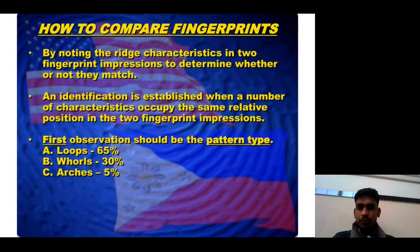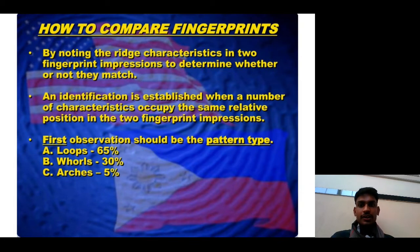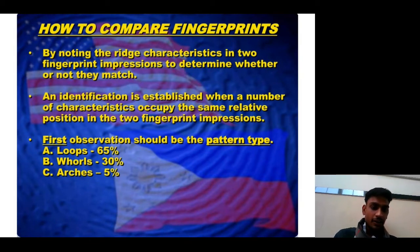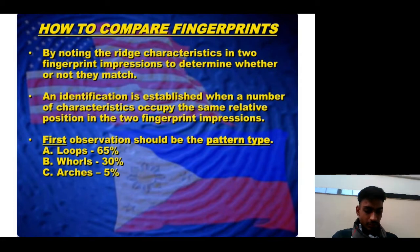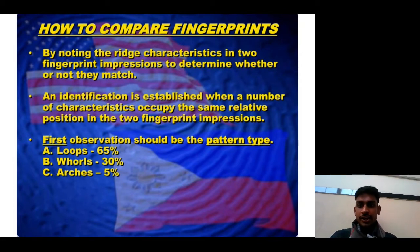To compare fingerprints, we note the ridge characteristics in two fingerprint impressions to determine whether or not they match. We take two fingerprint impressions, compare their basic parts, and establish an identification. An identification is established when a number of characteristics occupy the same relative position in both impressions.